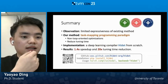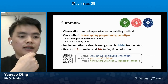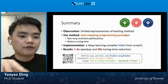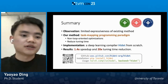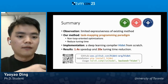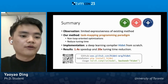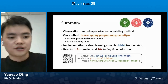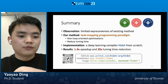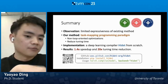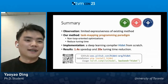In summary, we observed the limited expressiveness of existing loop-oriented scheduling, and proposed the task mapping programming paradigm to have better support for non-loop-oriented optimizations and to greatly reduce tuning time. We implemented a deep learning compiler based on this idea that can achieve 1.4x speedup and 20x tuning time reduction. We have also added a front-end for PyTorch so that we can directly use it with the help of Torch Dynamo. Welcome to try it, welcome to contribute, and we're open to collaboration. Thank you. Any questions?